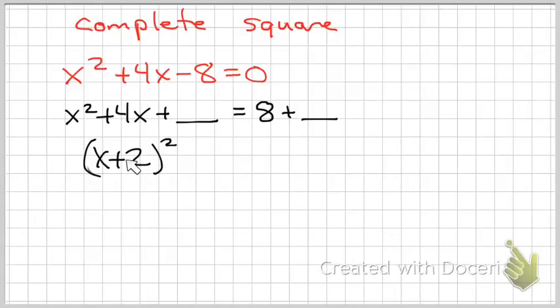Now, what goes here in this blank? 4. All I do is take this number here and square it. So 2 squared, 4. But if I add 4 to that side, I have to add 4 to this side. Keep it balanced. That equals 12. 8 plus 4 is 12.